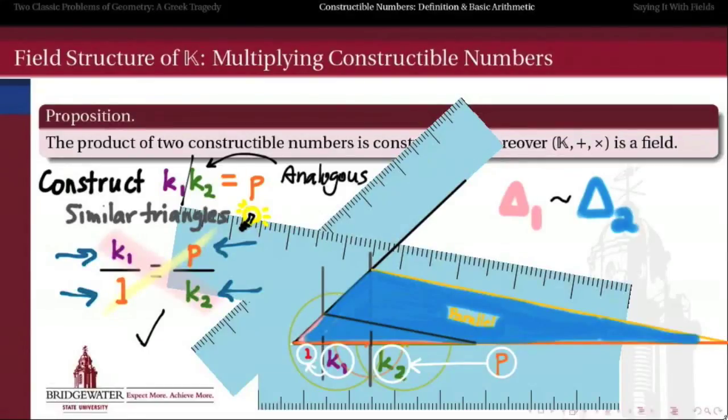So, so far, we know that the constructible numbers form a field. What we'll see next is that that field has one additional property that really puts the constructible numbers over the top on the interestingness scale. And we'll see that in the next video. Thank you.